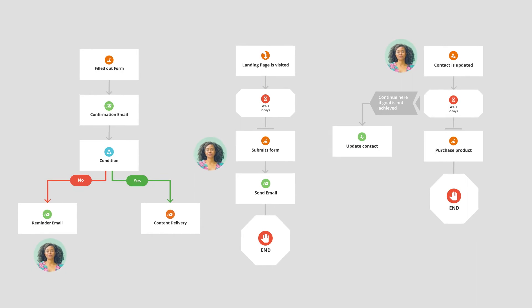We've built automations to support those needs. So depending on your settings, it's entirely possible that a contact may be in multiple places in an automation at once. This gives you all kinds of powerful possibilities and some great reporting options that you'll learn about later.